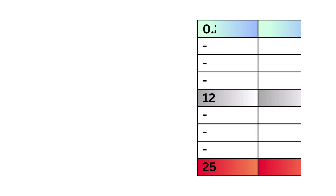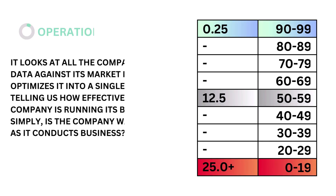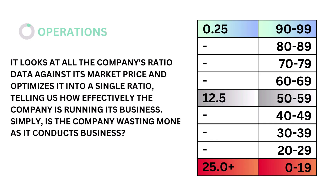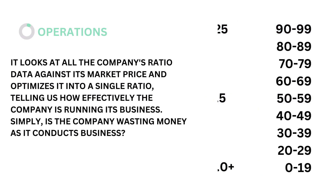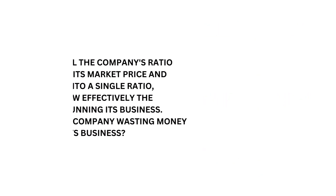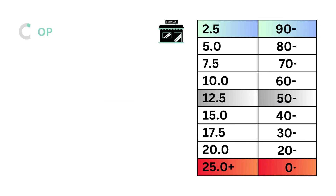Third, operations. Operations looks at all the company's ratio data against its market price and optimizes it into a single ratio, telling us how effectively the company is running its business — simply, is the company wasting money as it conducts business? The models tell us that an operations ratio of 12.5% is considered average. Here's our operations grade.